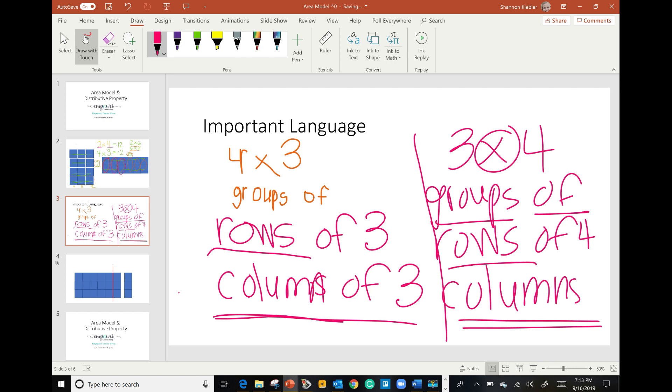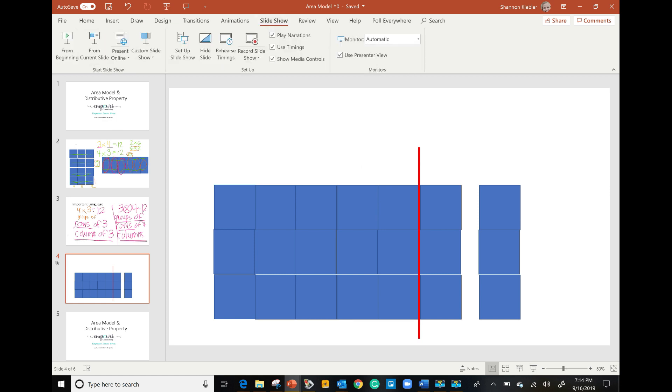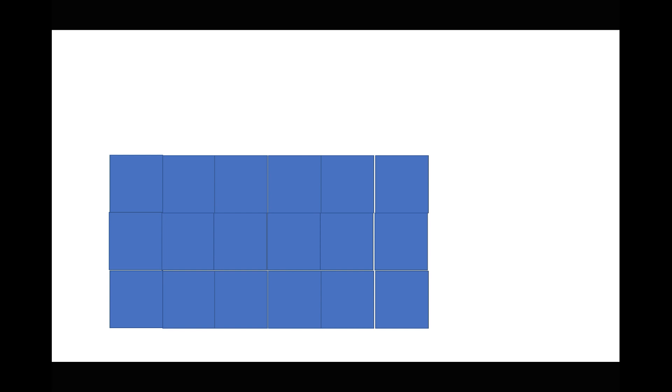After building rectangles, labeling them, counting without ones, creating equations, and identifying equal groups and rows and columns, we get to the distributive property — a bit more complicated. We now have a rectangle using 18 counters. We label it six by three — six columns, three rows. We could find six groups of three or three groups of six, either way giving us the area of this rectangle.